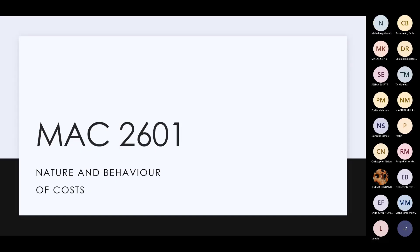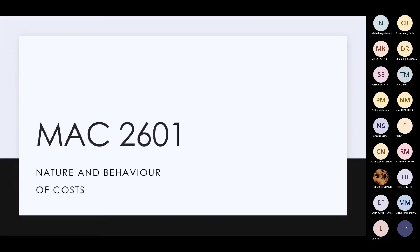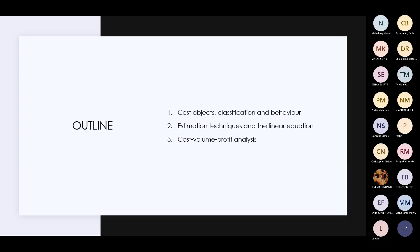Topic one: nature and behavior of costs. Topic one is mostly looking at what costs are, how they behave, and what is the definition of a cost. How do they behave and what are their traits? You look at things as a cost object, classification — we classify those costs and how do they actually behave.